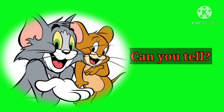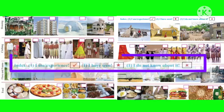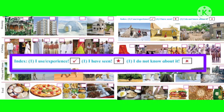Students, you have to tick the boxes in the pictures using the index given on page number 31. In this index, the first point is 'I use or experience' — for that you need to put a tick mark. 'I have seen' — for that you need to put a star mark. 'I do not know about it' — for that you need to put a cross mark.